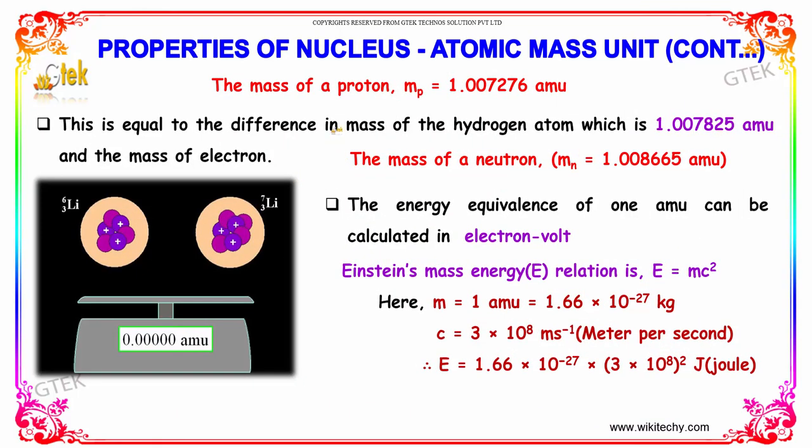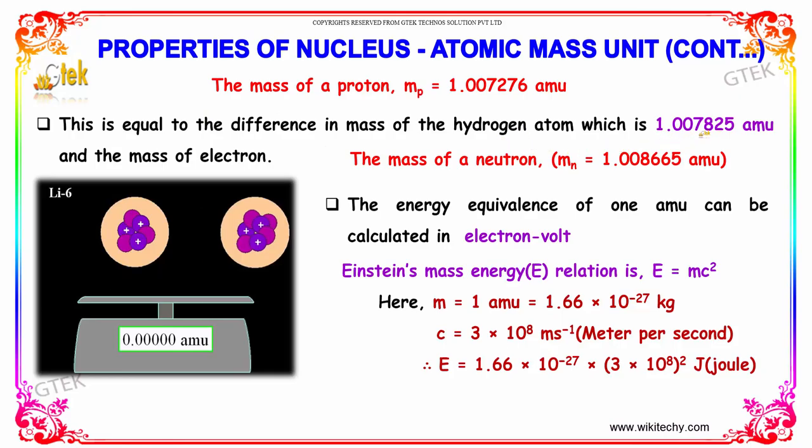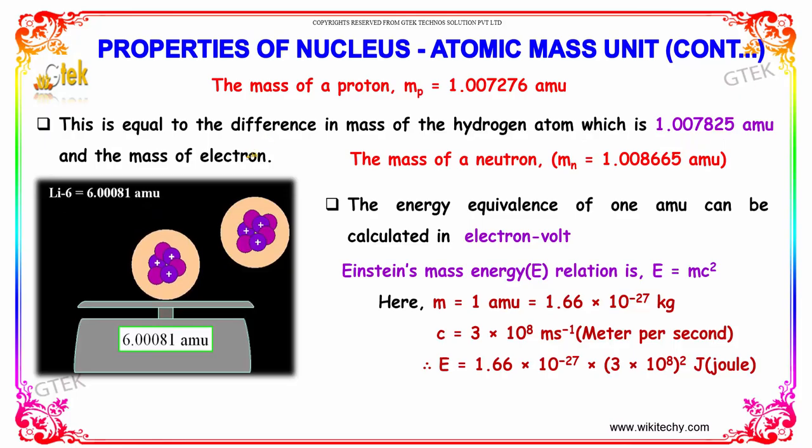The mass of the proton is equal to 1.007276 amu. This is equal to the difference in mass of the hydrogen atom, which is 1.007825 amu, and the mass of the electron.